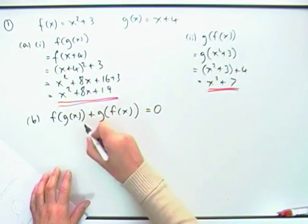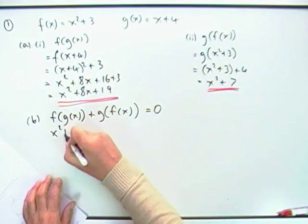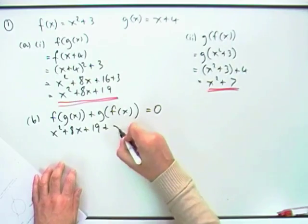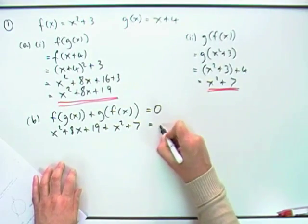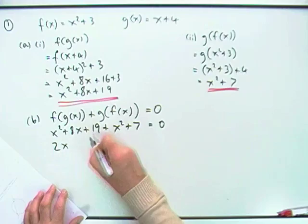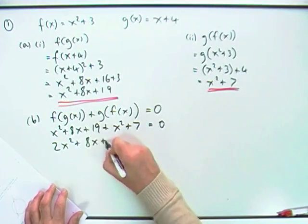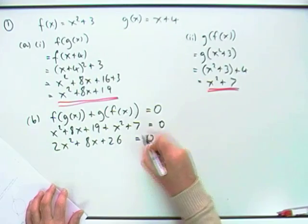Well, that's a discriminant question. What have we got? Well, the first part was x squared plus 8x plus 19. The g part was x squared plus 7. That should equal 0. Tidying that lot up, I've got two lots of x squared plus an 8x plus a 26.